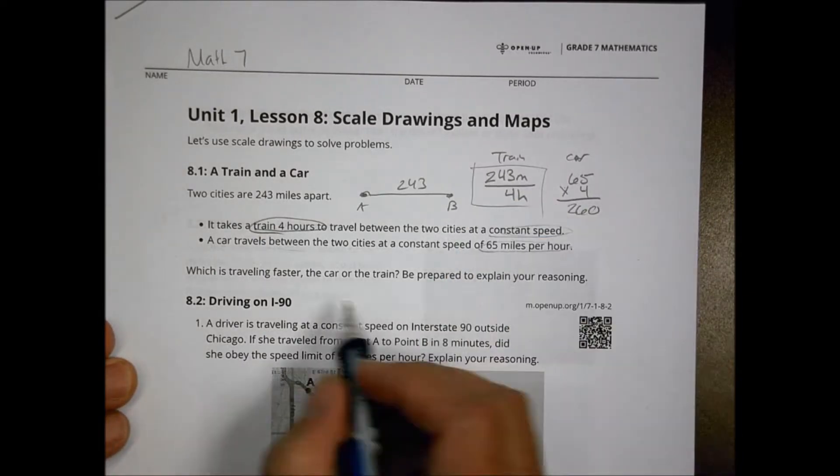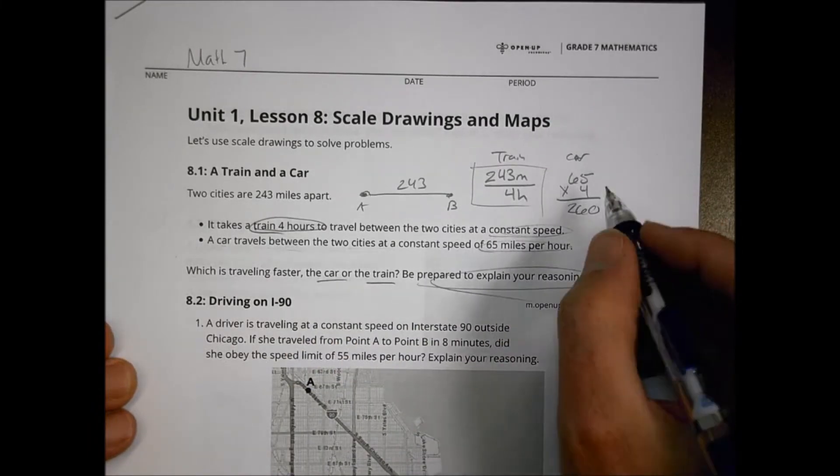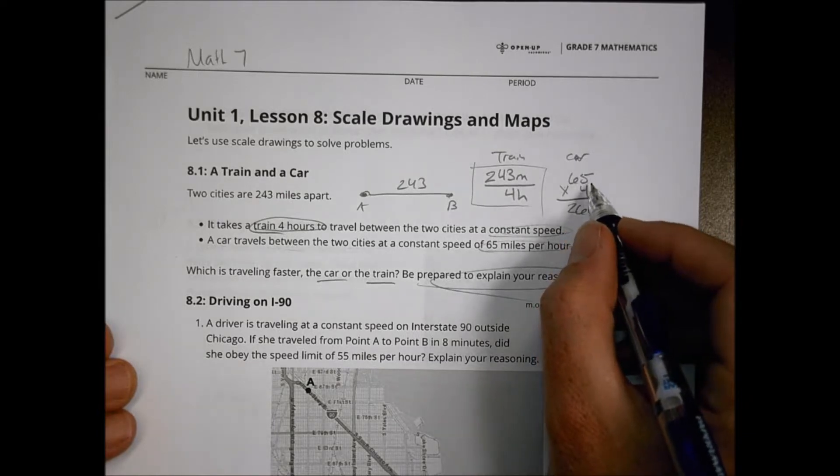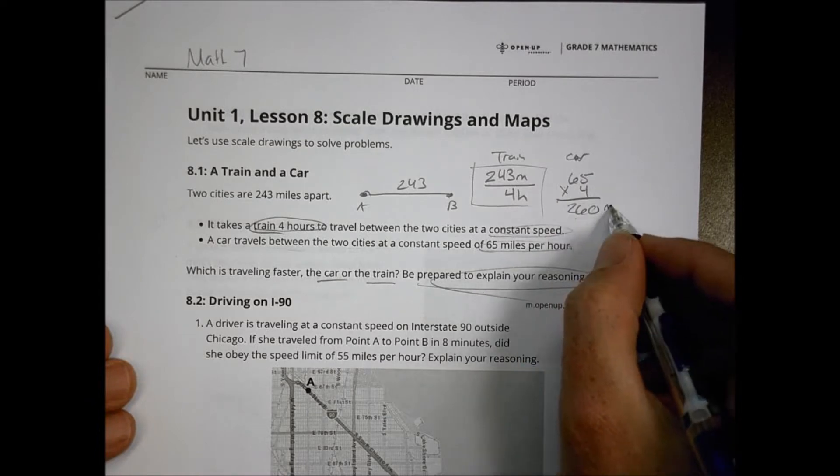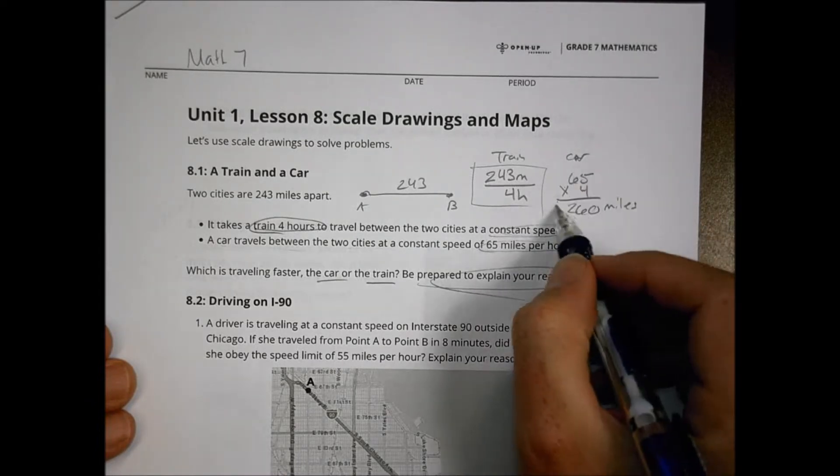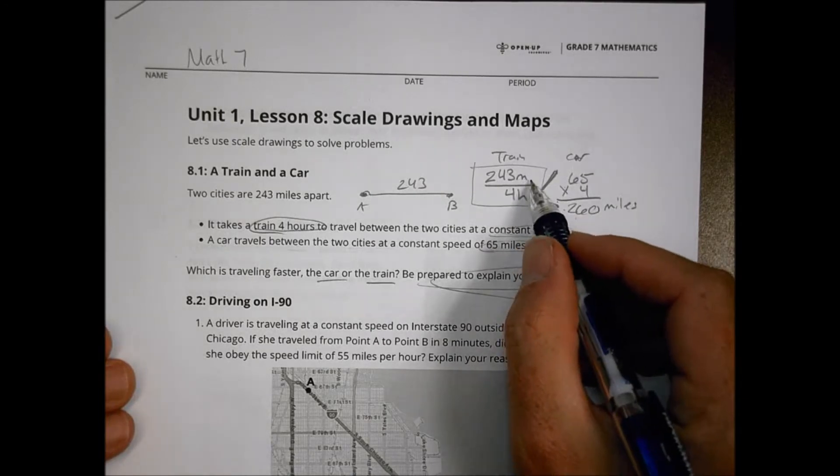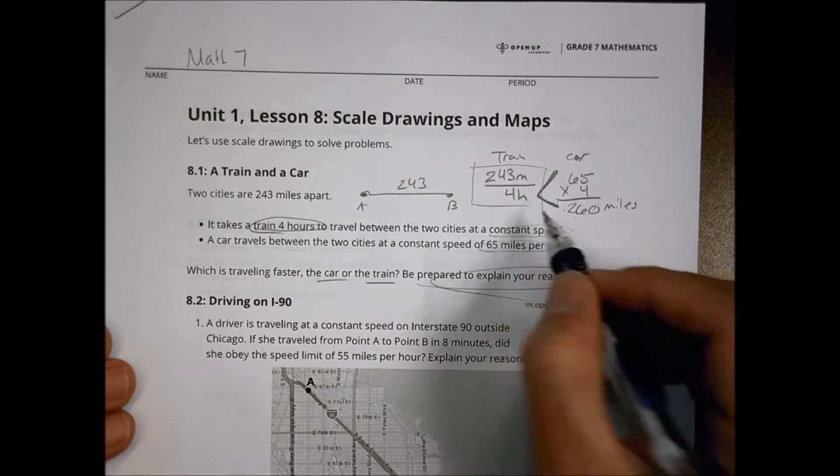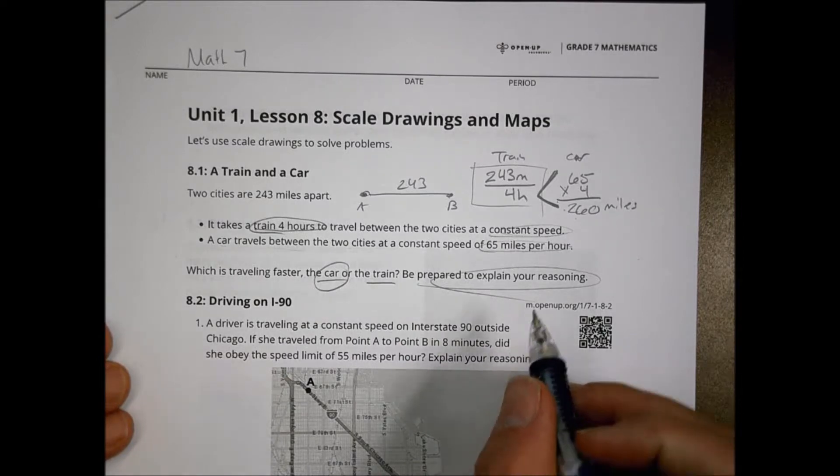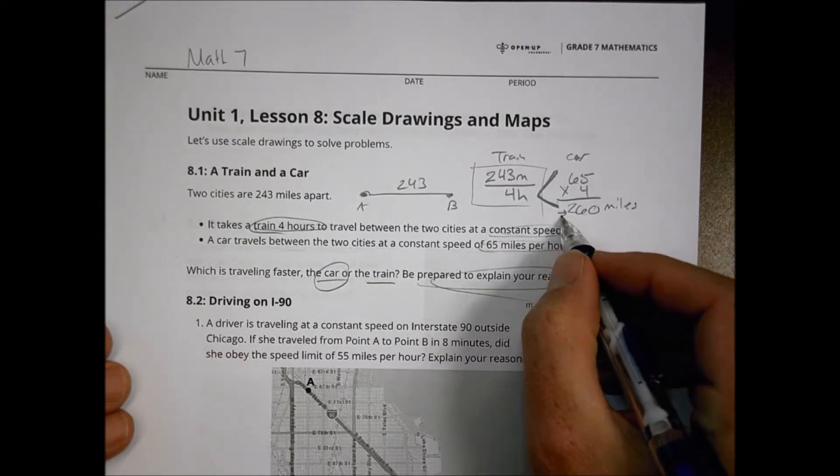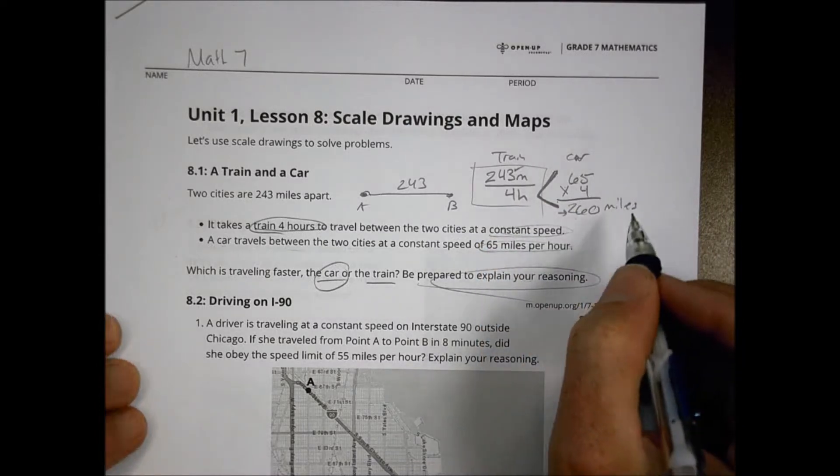If that's happening with a car, then you might have said in your class today that it can actually travel 260 miles in four hours. So the question was, which is traveling faster, the car or the train? When we look at the car example, if it's going 65 miles an hour for four hours, it's going to travel a total distance of 260 miles. That amount already is greater than what the train is doing in four hours at 243 miles. So the car is traveling faster than the train.